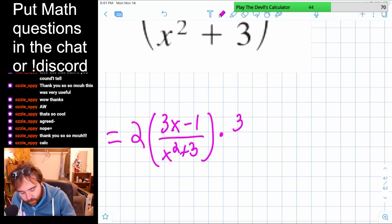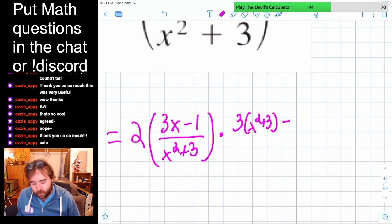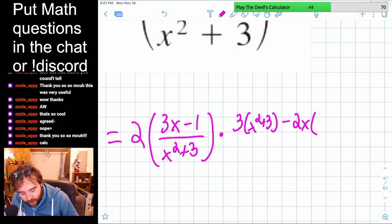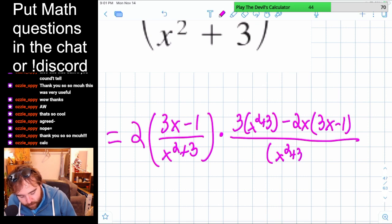which is 3, times x squared plus 3, minus the derivative of the bottom, which is 2x, times the original top, divided by the bottom squared.